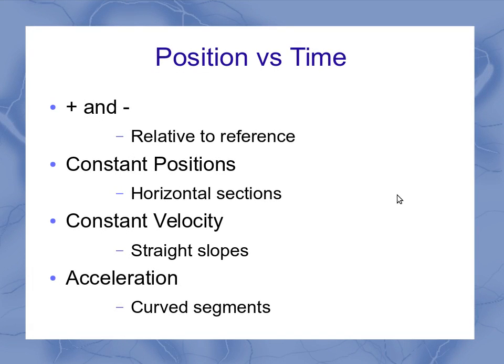So for the position versus time graph, the positive and negative lets you know where you are relative to your reference point. Constant positions or no velocities are horizontal sections.